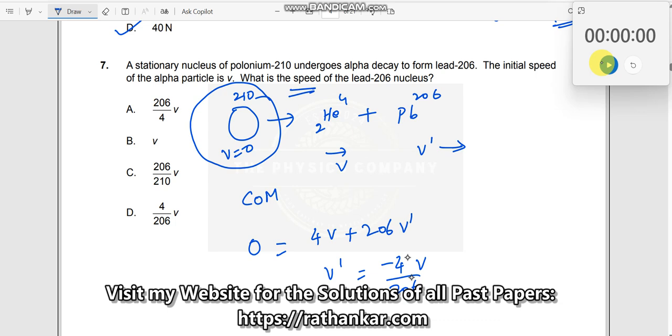Since he is asking about the speed, I need not take the value of minus, so put this as plus. Four by 206 v is nothing but option D.